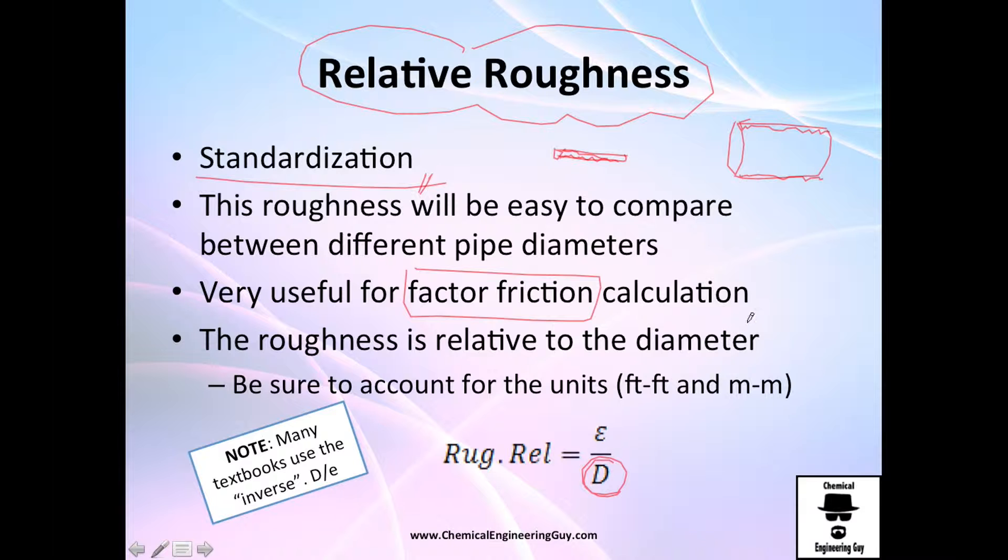It's actually easier to compare between each of the pipes. For example, a relative roughness of a pipe of PVC, we can compare it versus a relative roughness of another pipe with another size of steel. It's very useful, especially for the friction or factor friction calculation. And very important, it depends on the diameter. If we decrease diameter, relative roughness increases. If we increase the diameter, the relative roughness decreases, and that means friction decreases as well.